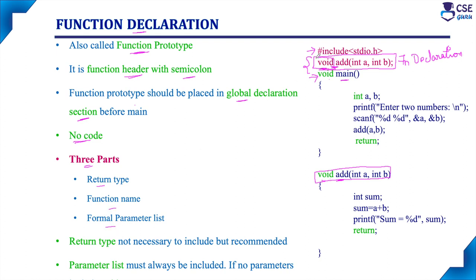The first part is return type — here it is void. If the return data type is needed, we can specify int, float, or char according to the program. Next we need to specify the function name. To name a function, we need to follow certain rules, and the rules are similar to naming identifiers.